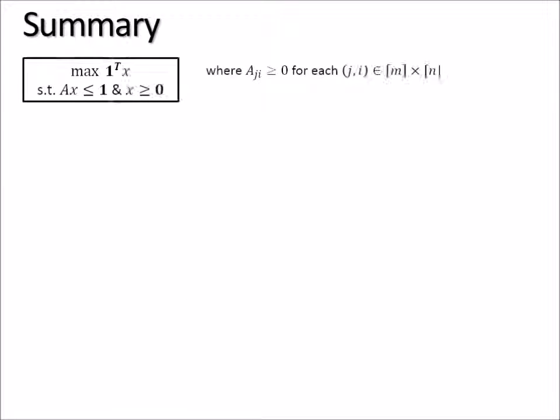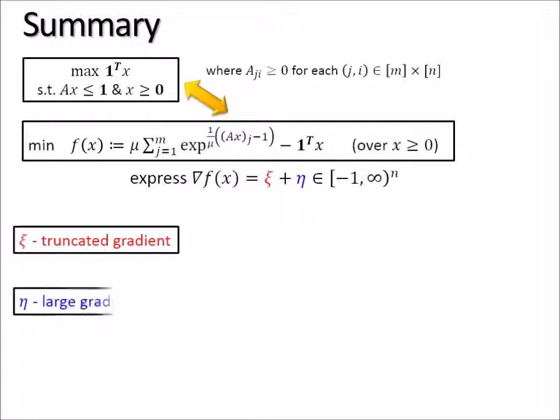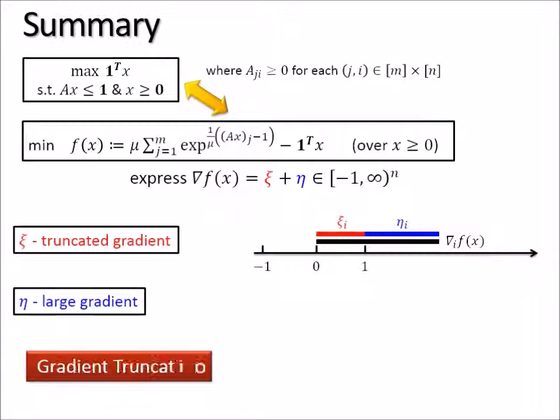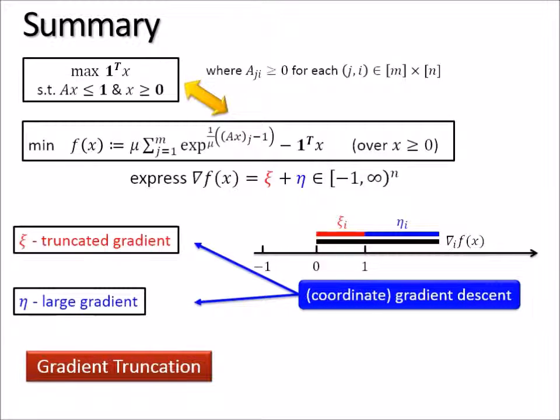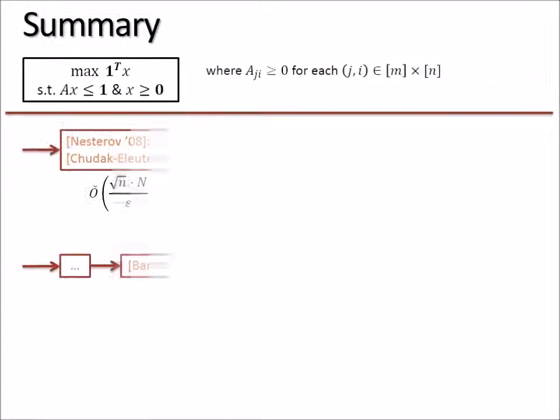To sum up, beginning with the packing LP, we first converted it into a purely convex minimization problem. We expressed the gradient into the truncated and large parts like this. Then we applied gradient descent with respect to both eta and qc, and we applied mirror descent. Then we combined the analysis of the three and we get this result.